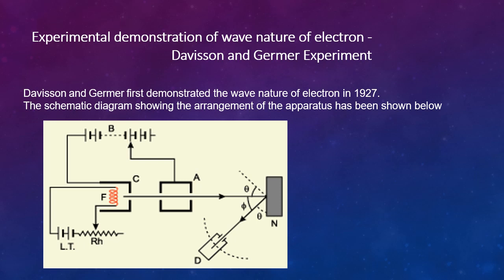Next, we will see the experimental demonstration of wave nature of electrons, that is, the Davisson and Germer experiment. The wave nature of electrons was first experimentally verified by C.J. Davisson and L.H. Germer in 1927 and independently by G.P. Thomson in 1928. The experimental arrangement is shown here.